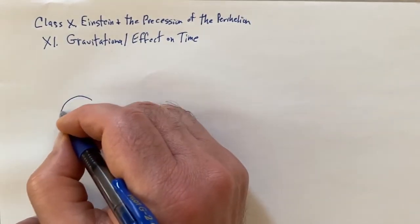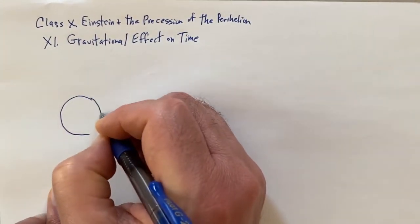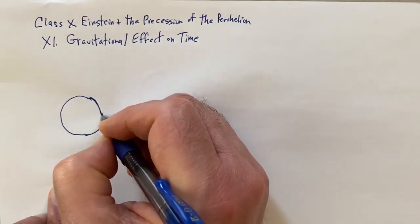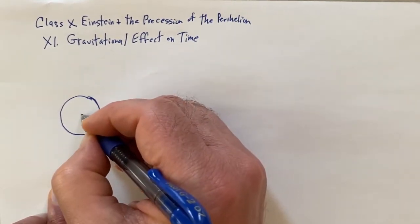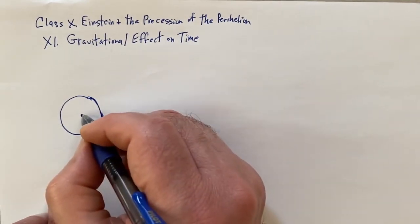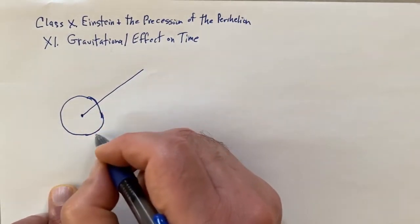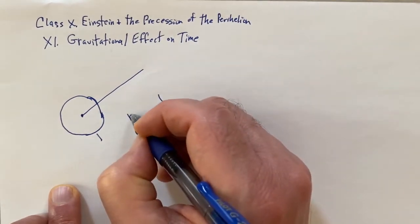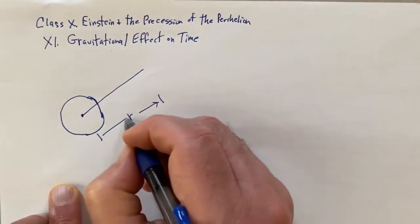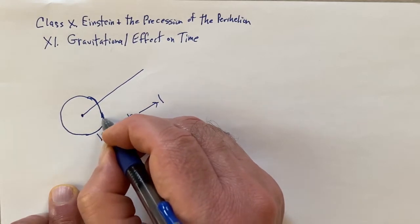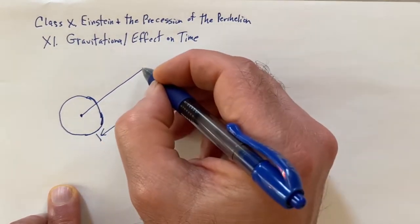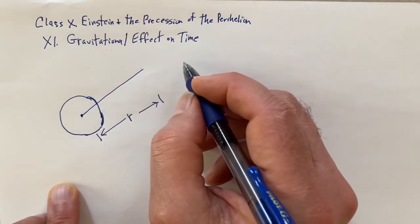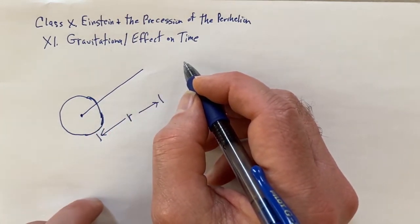So here we have a celestial body. We'll be looking at the sun as the body. Let's look at a distance from the center of the sun, and we're going to look at conservation of energy.